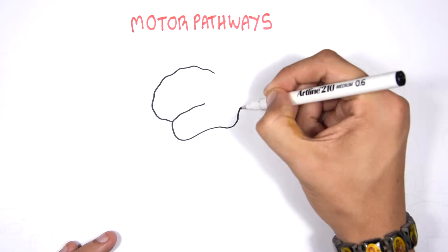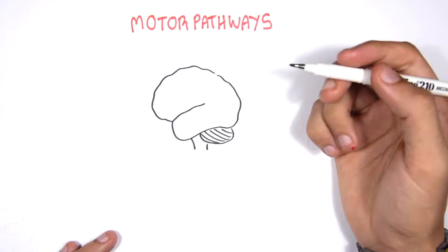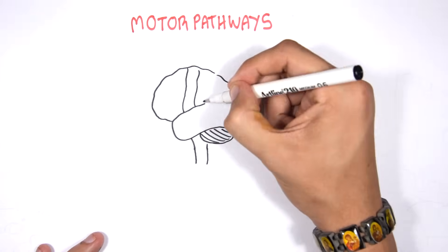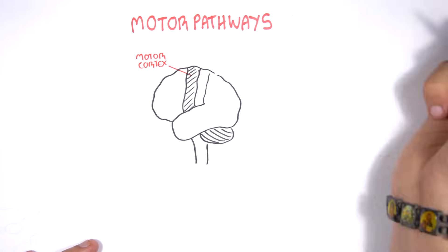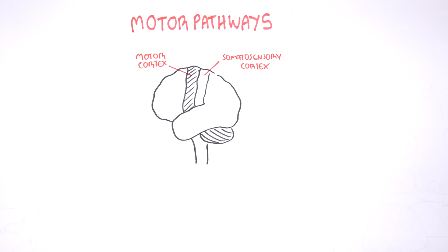In the brain, there are two important cortexes: one in front of the central gyrus, known as the motor cortex, and the other at the back, which is the somatosensory cortex. These two cortexes are important — one controls motor movements and the other sensation. We will be focusing on the motor cortex.